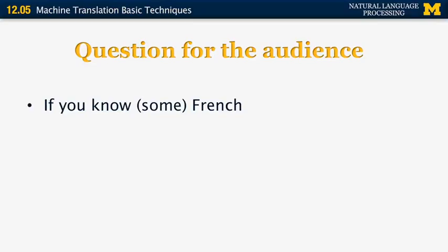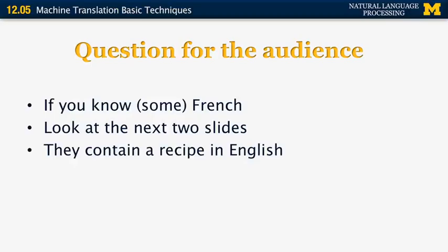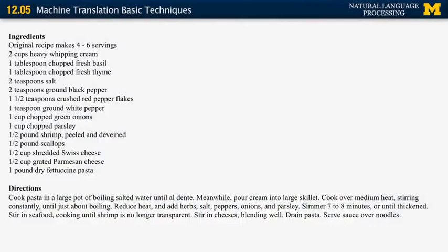Here's a question for the audience. If you know some French, look at the next two slides, which have been translated automatically by Google Translate, and see if you can figure out whether the system did a good job and what sort of mistakes it made. The documents are about a recipe in English. Look at the next two slides, pause as much as you need, and go back and forth to identify the translation issues. Here's the original recipe — ingredients, then directions. One sentence: 'Cook pasta in a large pot of boiling salted water until al dente.'